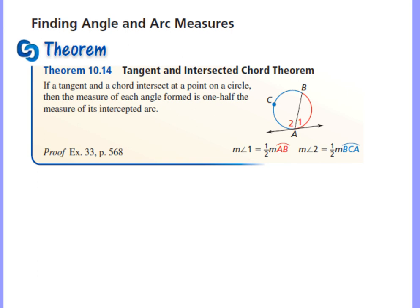So let's dive right in. If you see over here in the diagram, what we have is an intersection between chord BA and a tangent line with a point of tangency at point A. What ends up happening by utilizing this theorem here is that when we are dealing with a tangent and a chord intersecting at a point on a circle, the measure of each angle formed is one-half the measure of the intercepted arc.